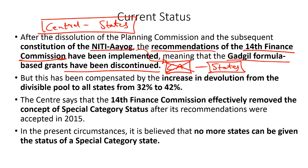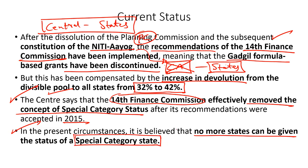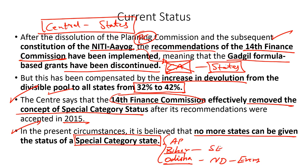To compensate for the loss of central assistance which was earlier coming from the Planning Commission, the 14th Finance Commission increased the devolution of funds from 32% to 42%. Since these recommendations were accepted by the central government in 2015, the status of special category has been effectively removed. The Centre has said no other state can be given special category status, but over the last few years a number of states have been raising this demand — including Andhra Pradesh, Bihar and Odisha. Odisha is demanding it due to multiple natural disasters; Bihar due to low socio-economic development; and Andhra Pradesh because it was bifurcated recently to form Telangana and Andhra Pradesh.